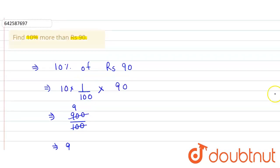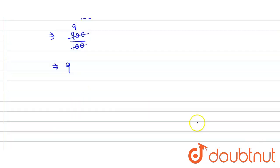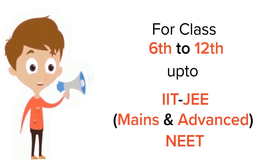So in the question we have to find 10% more than rupees 90. The 10% of 90 is 9. So the required number will be 90 plus 10% of 90, which is 9. We get 99 rupees, that's our answer.